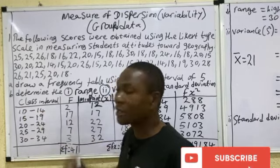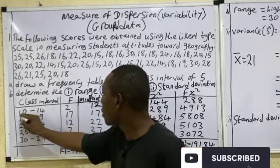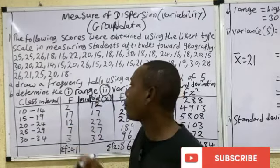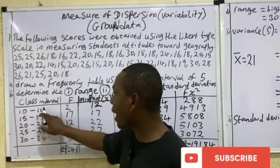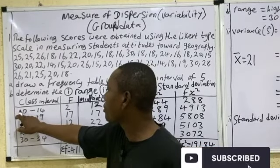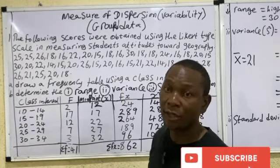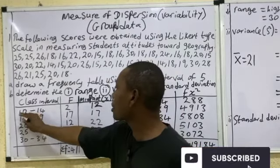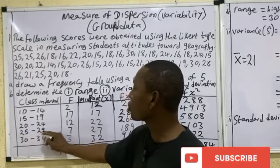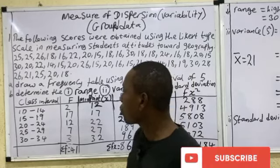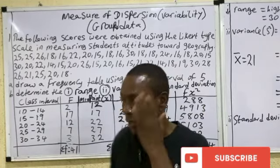So I take 10 to 14 as my first class interval. Note that 10 to 14 is a class width of five — to verify, subtract 0.5 from 10 to get 9.5 and add 0.5 to 14 to get 14.5; then 14.5 minus 9.5 equals five. The class intervals are: 10–14, 15–19, 20–24, 25–29, and 30–34. Note that the lower class limits 10, 15, 20, 25, 30 are all multiples of five.